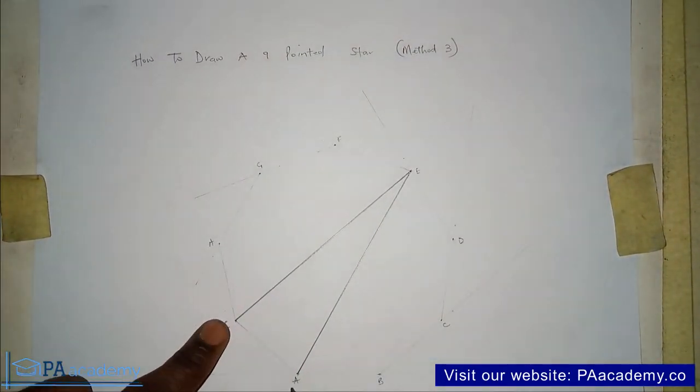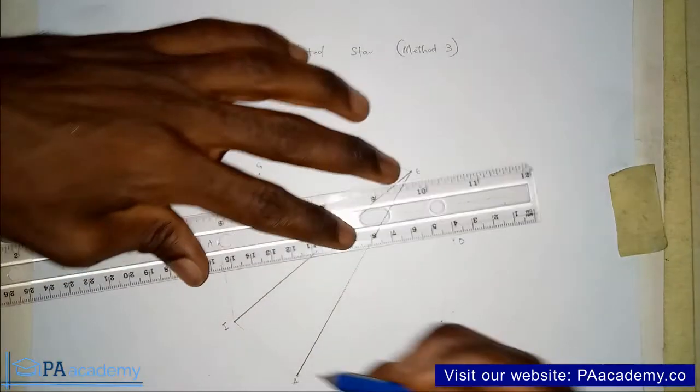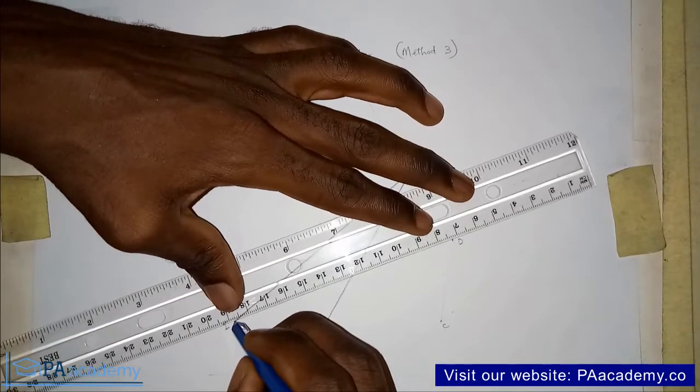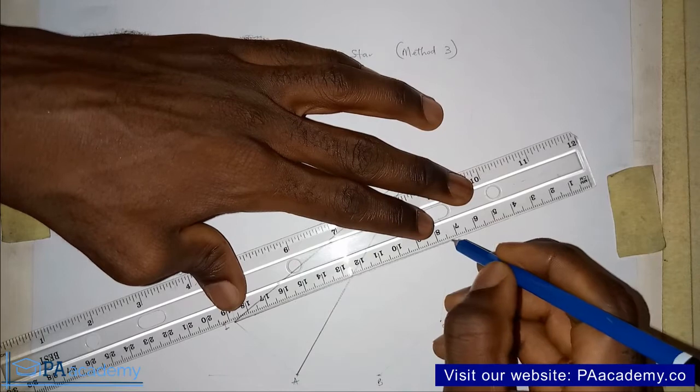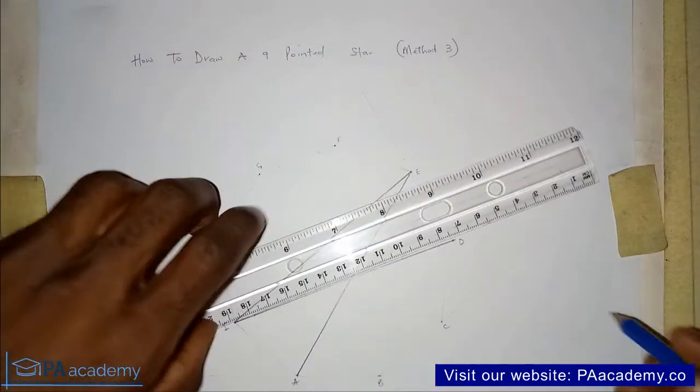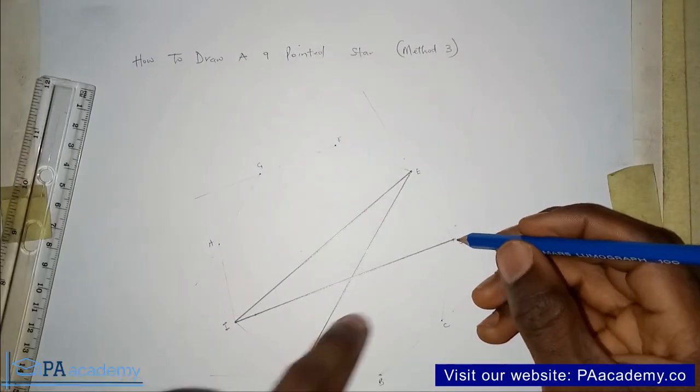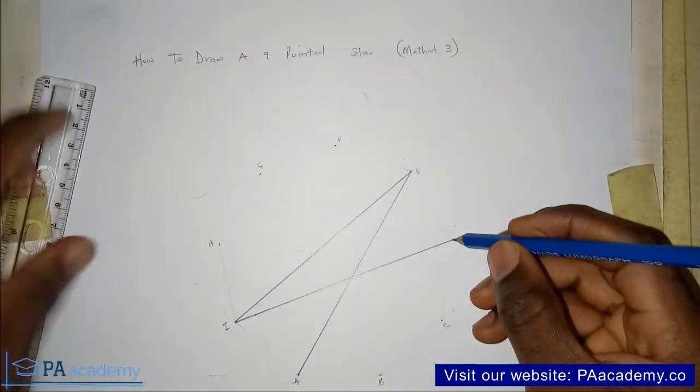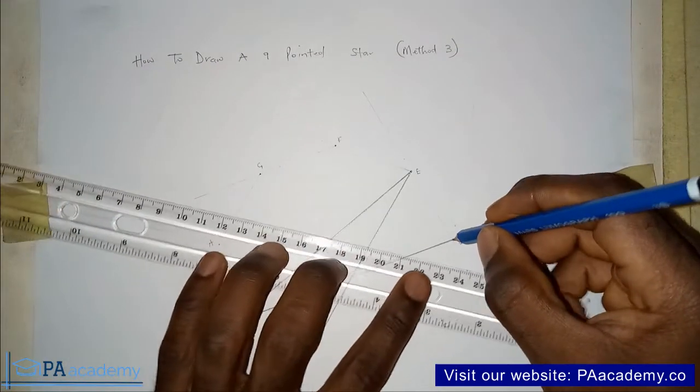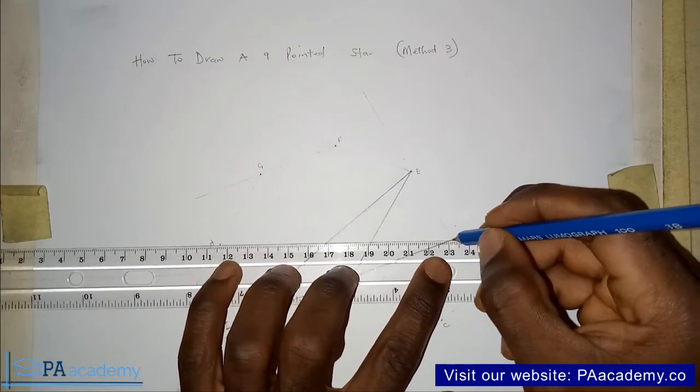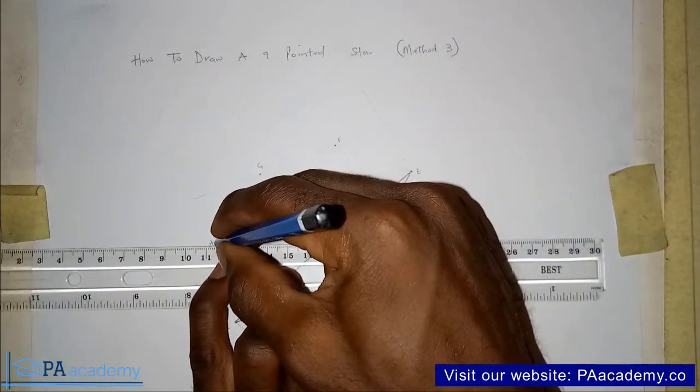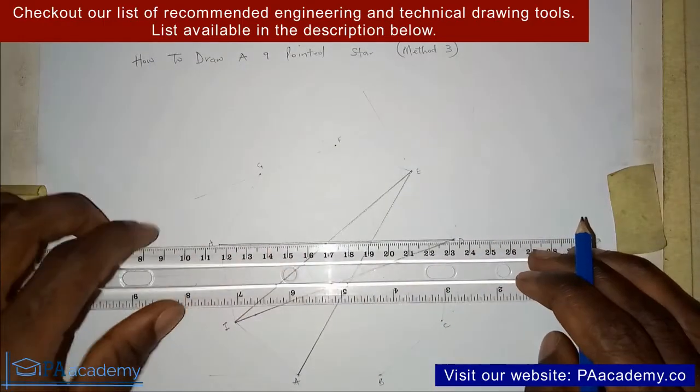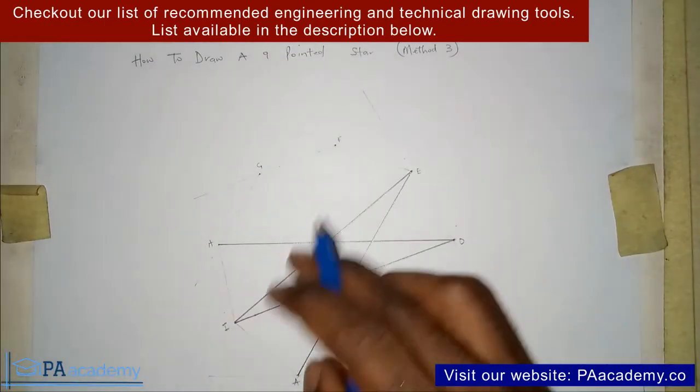So from I, we are going to skip A, B, and C straight to D. And then from D, we are going to skip E, F, and G. That will take us to H. Also important to note the direction that we are taking.